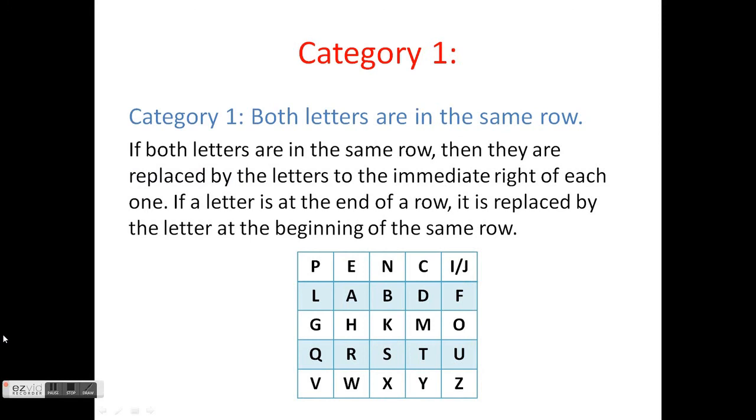If both letters are in the same row, simply replace each letter with a letter to the immediate right. If there's no letter to the right, like for F, for example, I would just use the letter at the start of the row, which in that case is L.